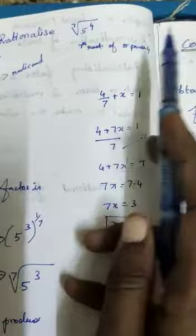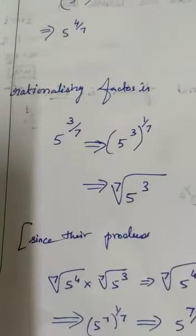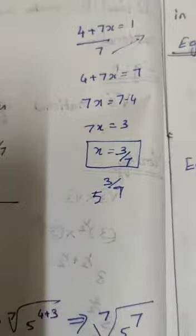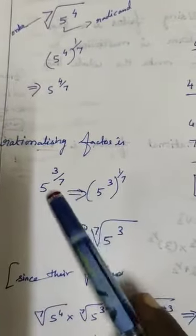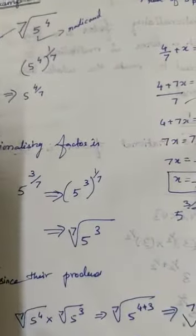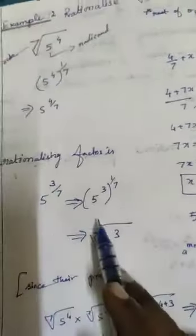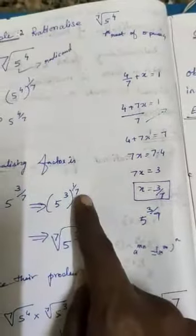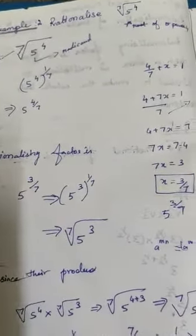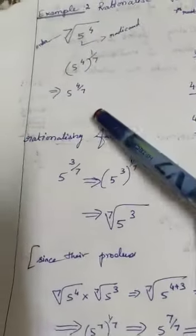Rationalization factor. We need to find the rationalization factor. 5 power 3 is the factor. We take 5 power 3 by 7 and write it again as index form. The power m by n formula: a power m by n equals a power m into power n. Using this method, the index formula becomes radical formula.